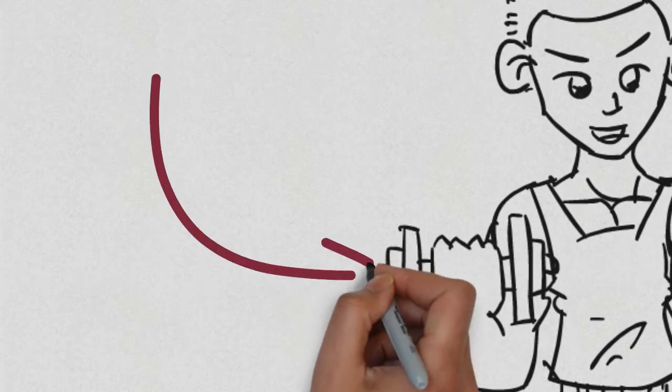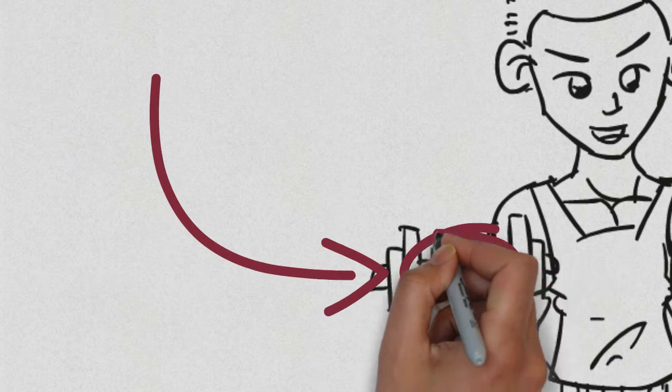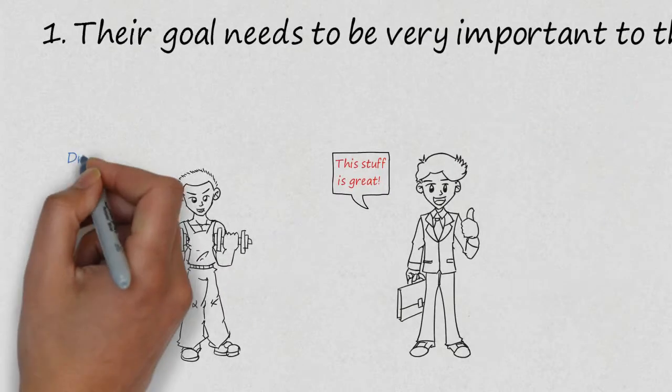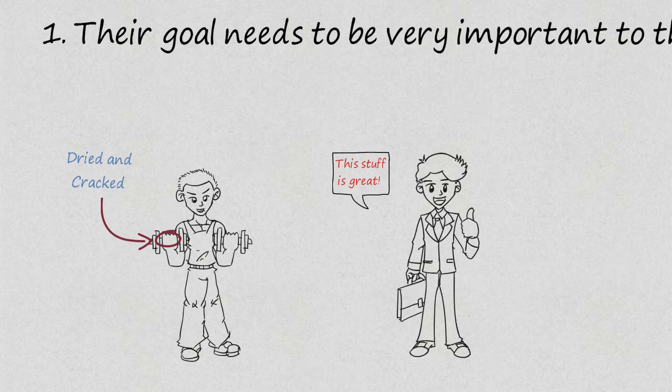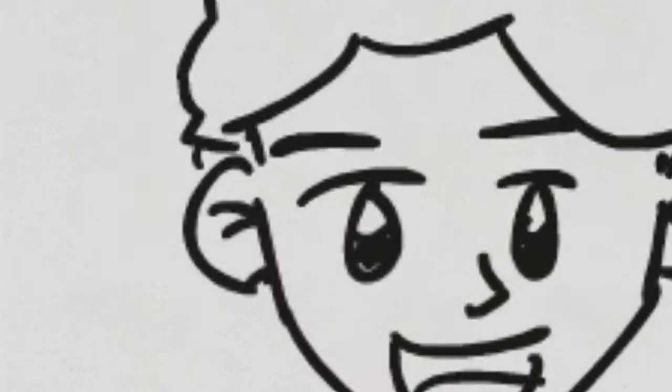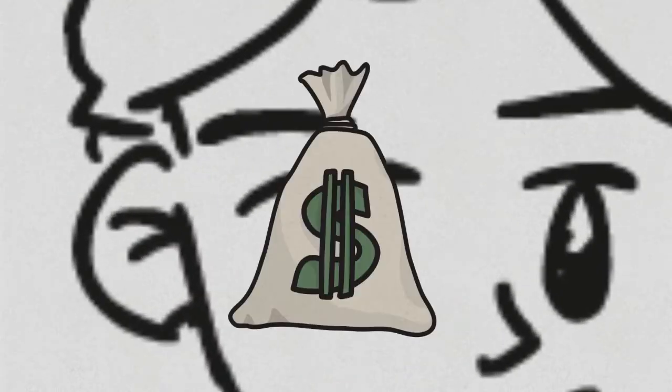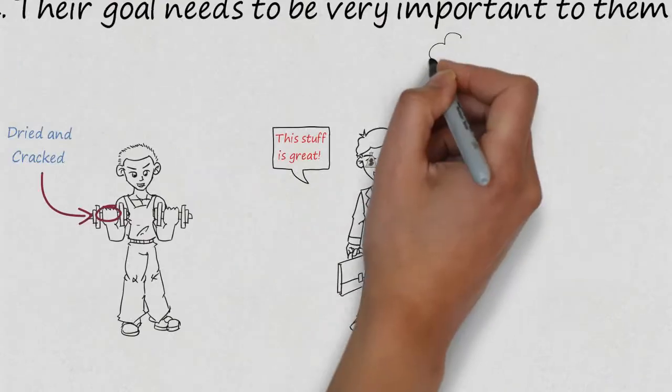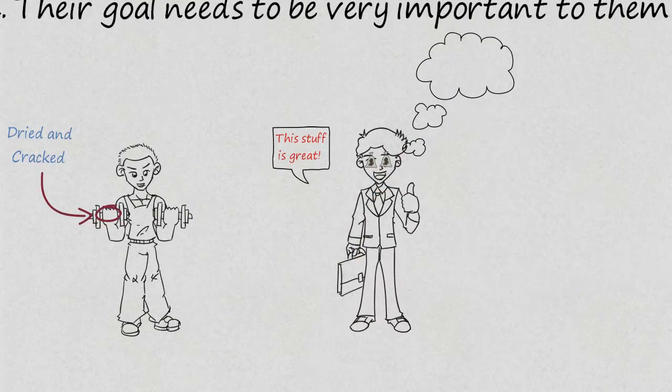When he looked at my hands, he saw that my hands had thick calluses on them, they looked dried, they looked cracked. And as he looked over my hands, I saw something happen in his eyes. His eyes filled with dollar signs. I could tell that this guy was thinking, this guy needs my lotion.